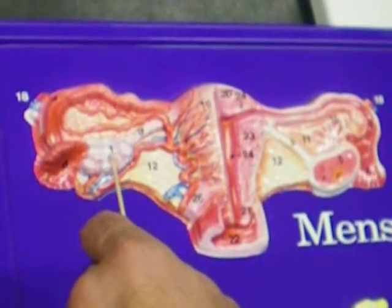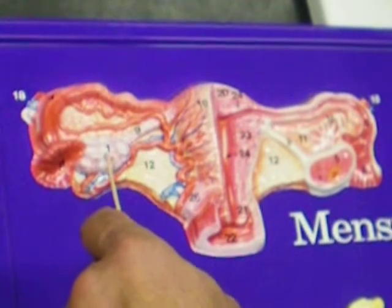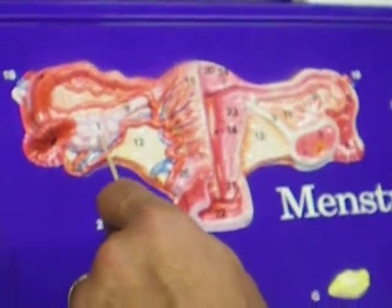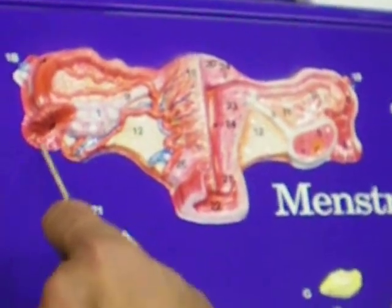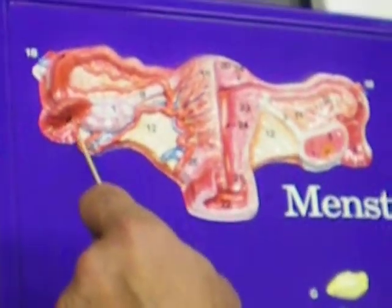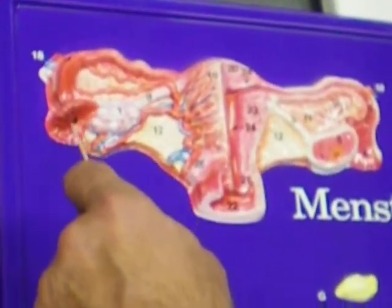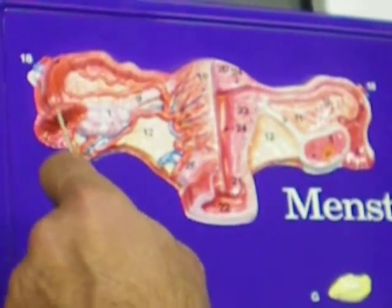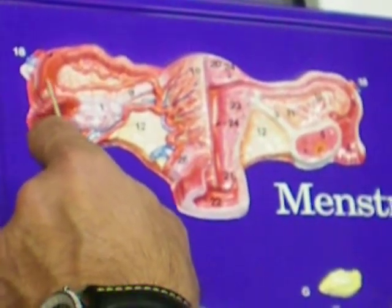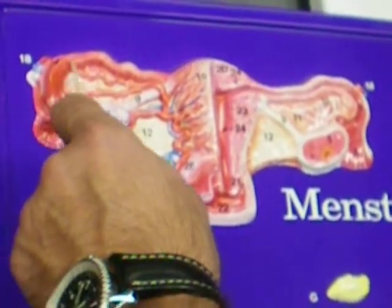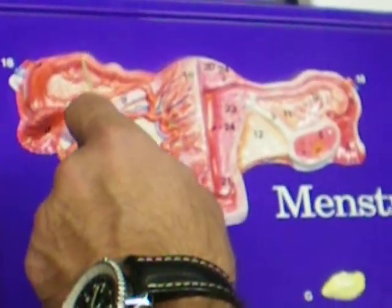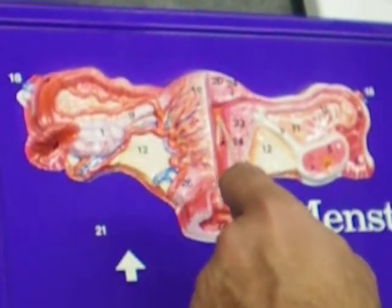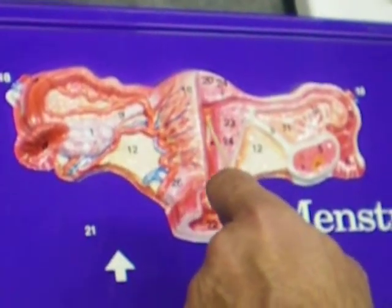During ovulation, when the oocyte leaves the follicle, it enters into the fimbriae of the fallopian tubes. From the fimbriae it travels into the infundibulum, and then into the ampulla, and then into the region called the isthmus, which connects to the body of the uterus.